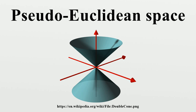In a pseudo-Euclidean space, unlike in a Euclidean space, there exist vectors with negative magnitude. As with the term Euclidean space, pseudo-Euclidean space may refer to either an affine space or a vector space over real numbers.